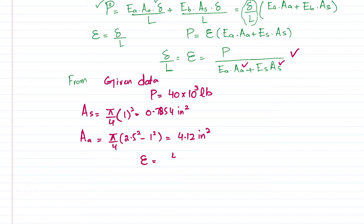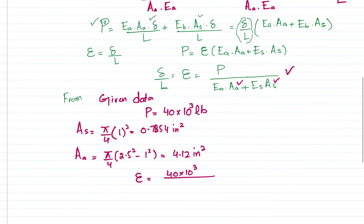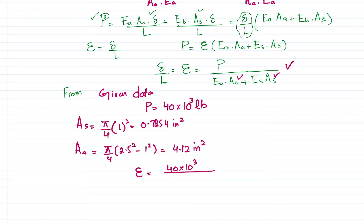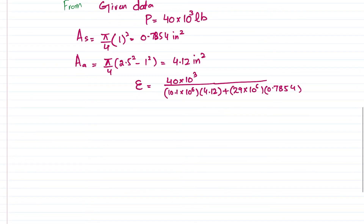Substituting into the strain formula: ε = (40×10³) / [(10.1×10⁶ × 4.12) + (29×10⁶ × 0.7854)]. Since the load is compressive, the strain is negative. After calculating, the strain comes out to be ε = −620.91×10⁻⁶.